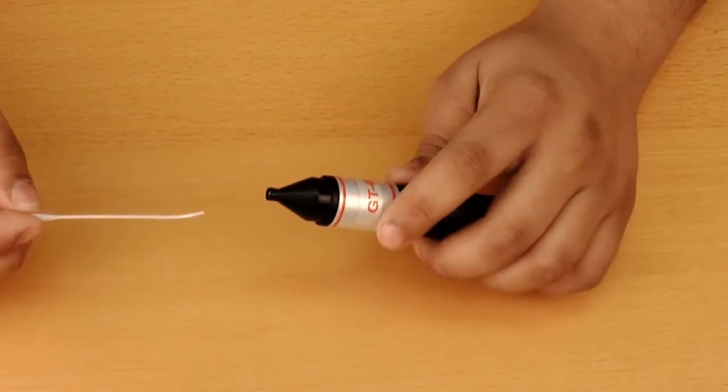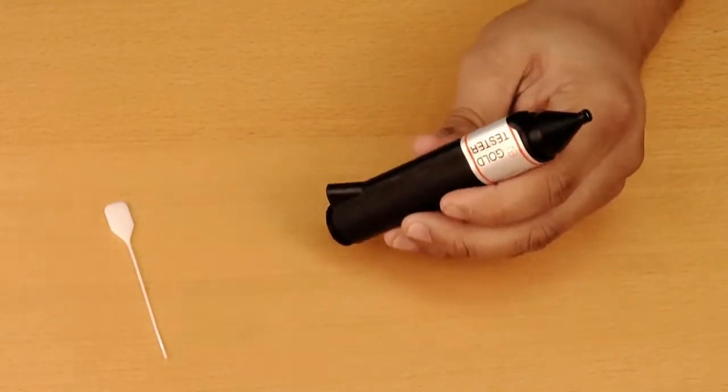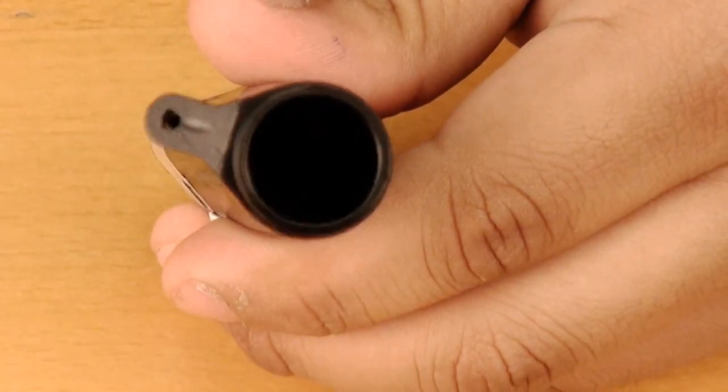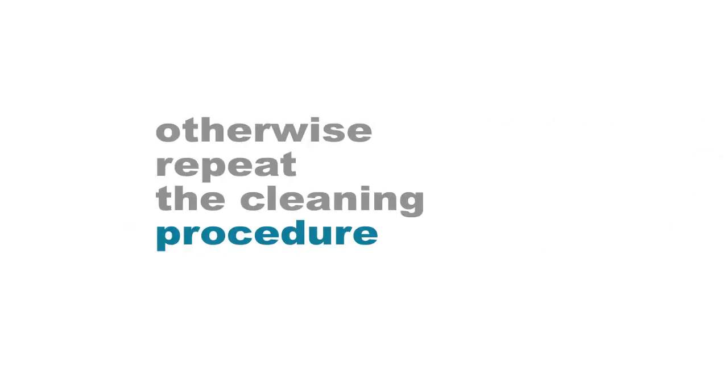Insert the plastic cleaner probe into the nozzle opening to force any loosened gel from the opening and shake out any remaining gel. You should be able to see light coming through the nozzle opening. Otherwise, repeat the cleaning procedure.